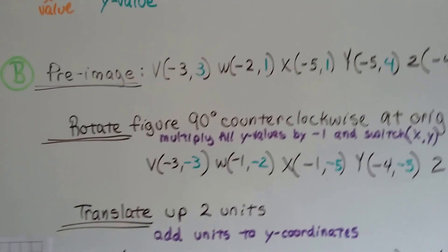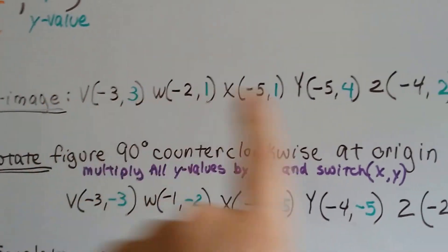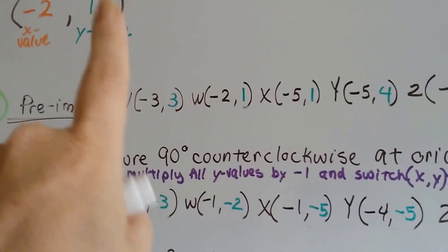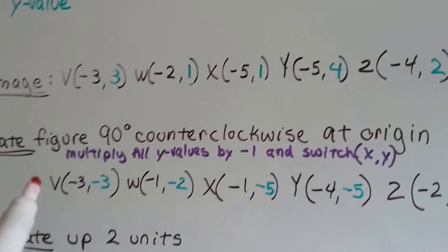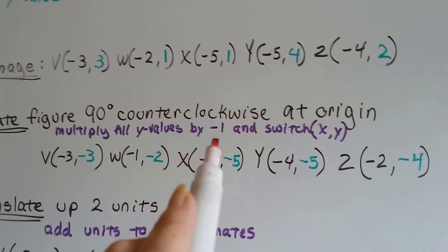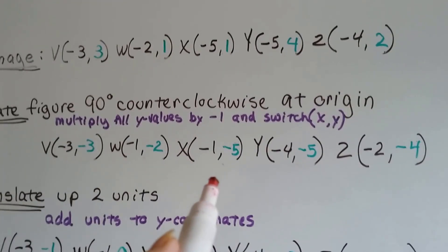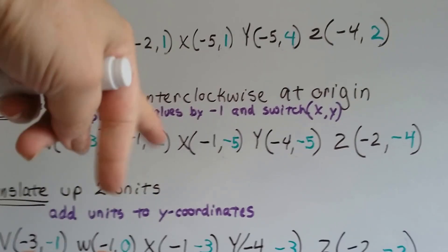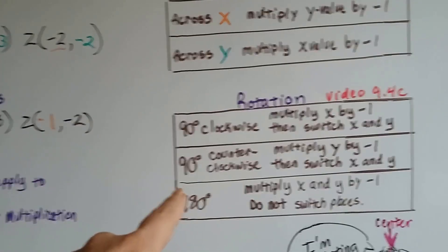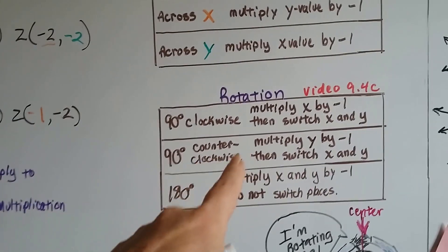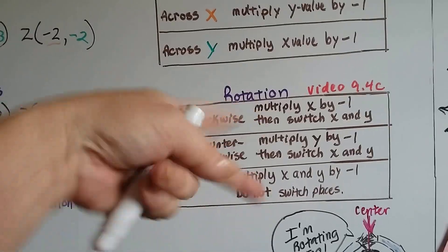So the pre-image B, the green image, had these x and y coordinates. In order to rotate the figure 90 degrees counterclockwise at the origin, we need to multiply all the y-values by negative one and switch the x and y values. That's the rule. When we rotate 90 degrees counterclockwise, we multiply the y-values by negative one and switch the x and y values.